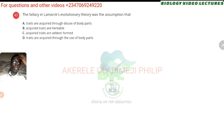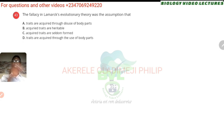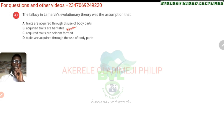The fallacy in Lamarck's evolutionary theory was the assumption that acquired traits are inheritable. The issue was he felt that if I start gymming and develop muscles, I can actually transfer that muscle trait to my offspring — even though I wasn't born with it. He believed you can transfer acquired traits to your offspring, which is wrong. It is only traits controlled by genes that you can transfer to the next generation. So the answer is B.